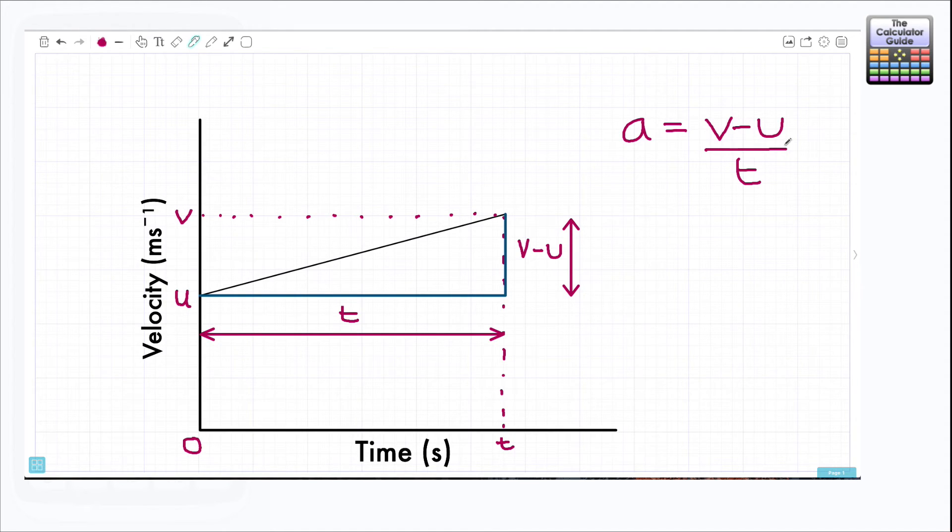Now what I'm going to do is rearrange that formula into a formula that you need to become familiar with or perhaps you've seen before. It's one of the kinematic equations of motion. So first thing I'm going to multiply both the left hand side and the right hand side by t. So I'm just going to rewrite out what I've got. Well I've got a t on the left hand side and then I've got v minus u on the right hand side and I'm going to make v the subject of this equation.